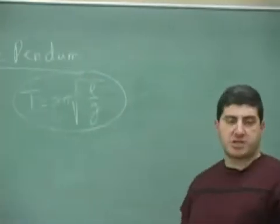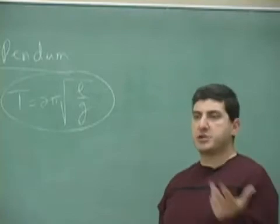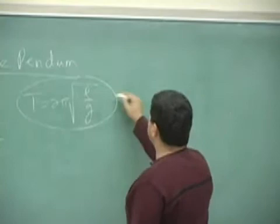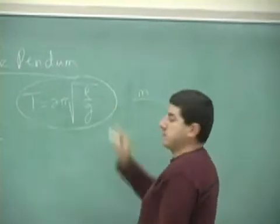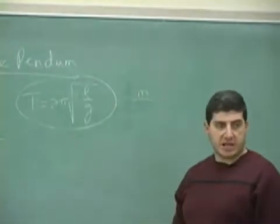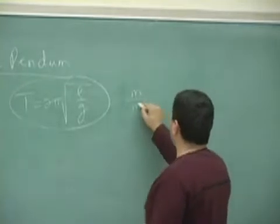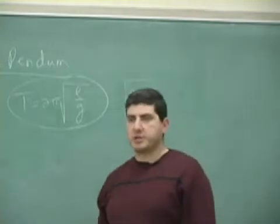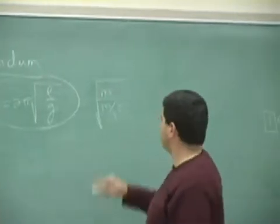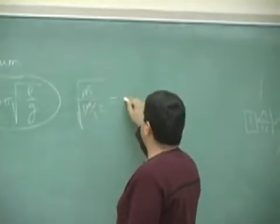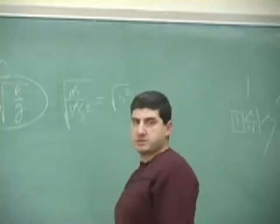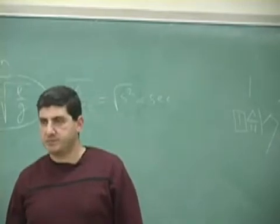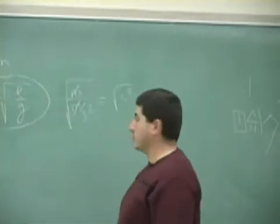Again, we can check to see if it has the right units. This one, l is meters, g is meter per second squared. Then square root of that. Square root of meter per meter per second squared. And then the meter and the meter cancel. Square root of second squared equals square root of seconds. So it has seconds. So right units. Unit-wise, it works out.